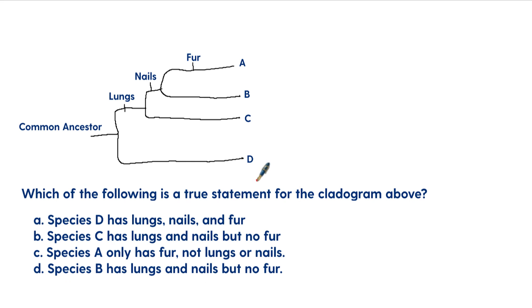All right, so here is another way of representing relationships between organisms. So in this particular one, we have species A, B, C, and D. And so we have the common ancestor here. And now what we're saying, we don't know what the species are, but we do know how they are differentiated. So at this point in time, D sort of branched off. Species D branched off. And then species A, B, and C all have lungs. So D does not have lungs.